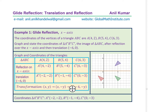So let's take up reflection on the x-axis. Example one: glide reflection, considering the x-axis. The coordinates of the vertices of a triangle ABC are A(4,2), B(5,4), C(6,3). Graph and state the coordinates of the image triangle A double dash, B double dash, C double dash — the image of triangle ABC after reflection over the x-axis and then translation (-6, 0), meaning 6 units left and not vertically.